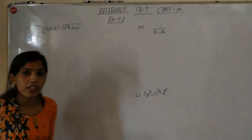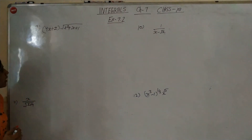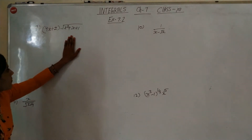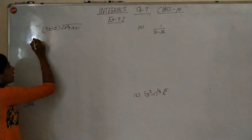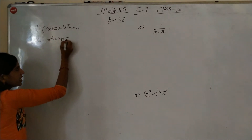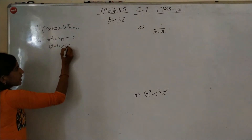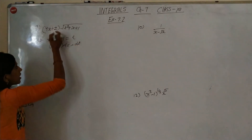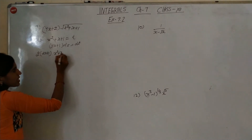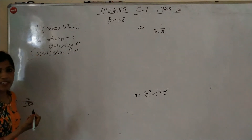The integral is of 4x plus 2 over x squared plus x plus 1. We put x squared plus x plus 1 equal to t, so 2x plus 1 dx equals dt. This transforms the integral to t to the power 1 by 2.